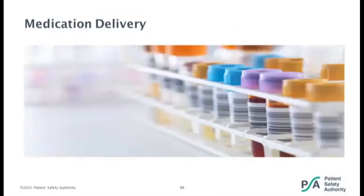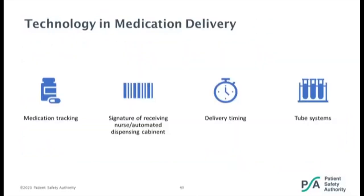Next, medication delivery. A big job of technicians throughout a hospital is medication delivery — making sure medication is to the patient on time, that it's the right medication in the right place, and the nurse knows where it is for the next dose. There's different technology used throughout medication delivery, including medication tracking where you can scan barcodes on the medication, scan the nurse's badge, or scan the automated dispensing cabinet. It's kind of like FedEx — you see your package's progress every step of the way.